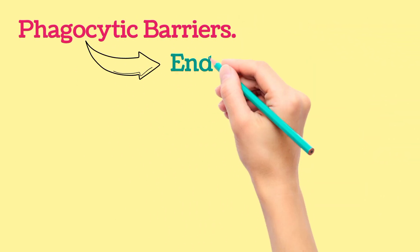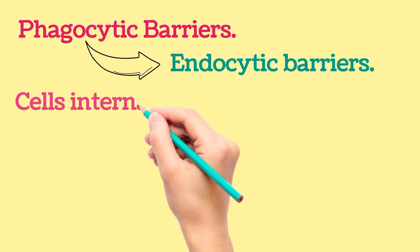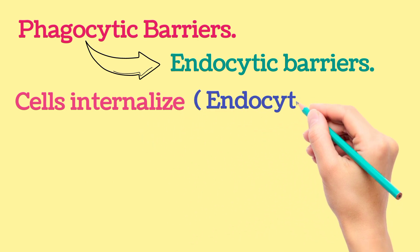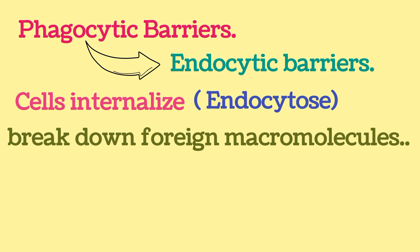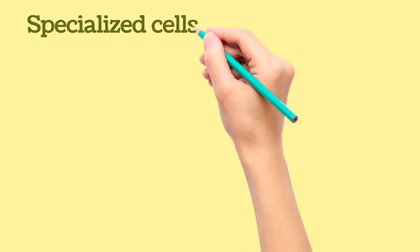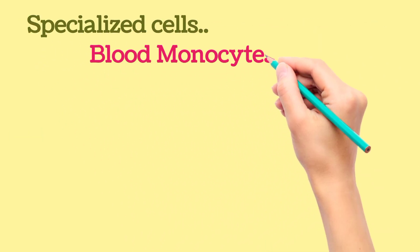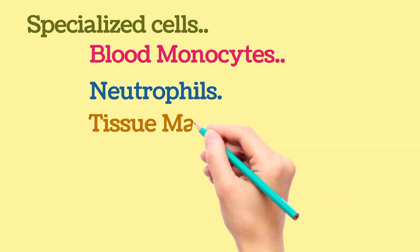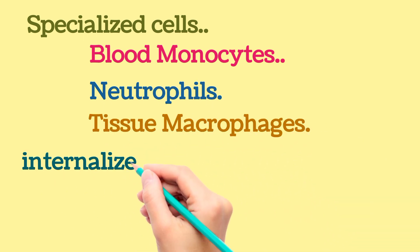Phagocytic barrier is also called endocytic barrier. Various cells internalize and break down foreign macromolecules. Specialized cells such as blood monocytes, neutrophils, and tissue macrophages internalize, kill, and digest whole microorganisms.